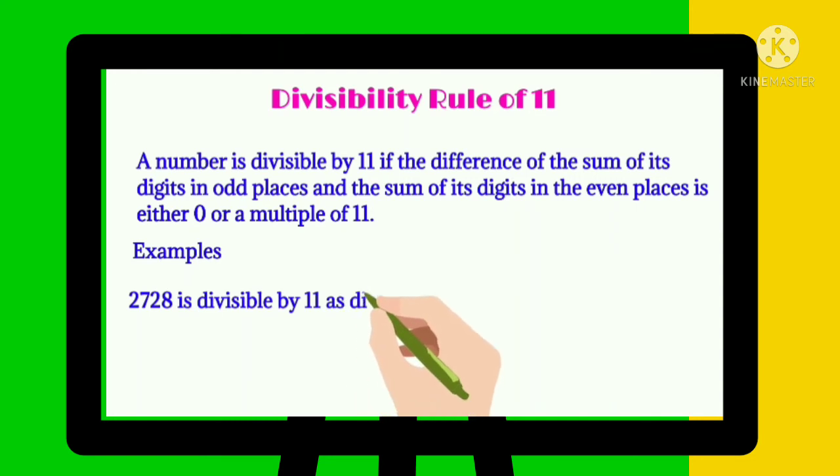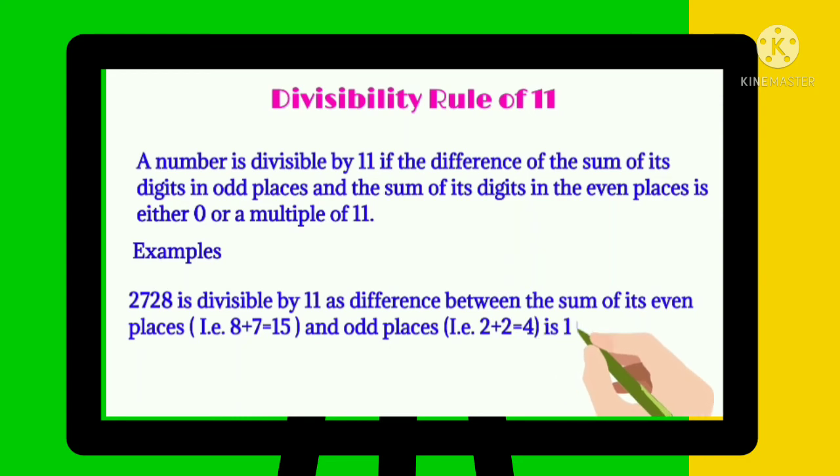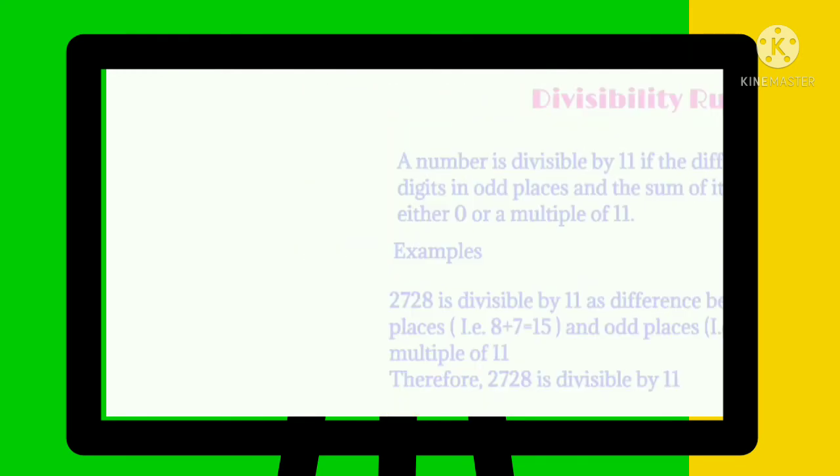2728 is divisible by 11 as the difference between the sum of even places and the sum of odd places—that is, 15 minus 4—is 11, which is a multiple of 11. Therefore, 2728 is divisible by 11.